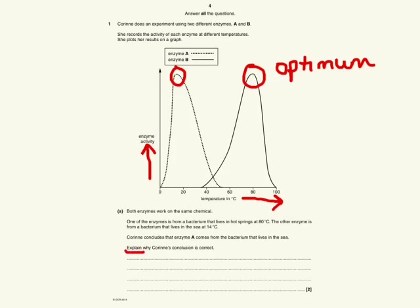The first thing you need to understand is that the optimum temperature for enzyme A is much below that of enzyme B. If you draw a dotted line down, you can see it's beneath 20 degrees, which fits with Corinne's explanation that it would be in the sea at around 14 degrees.